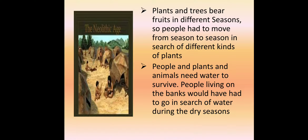Plants and trees bear fruits in different seasons, so people had to move from season to season in search of different kinds of plants. As we know, plants are totally dependent on seasons — one plant may bear fruit in one season and another in a different season due to climatic differences. So people had to keep changing their habitats.